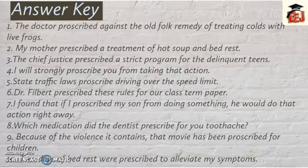Third sentence: 'The chief justice prescribed a strict program for the delinquent teens' — the chief justice advised a strict program for delinquent teens. Fourth: 'I'll strongly proscribe you from taking that action' — here proscribe means stopping someone from doing that action.